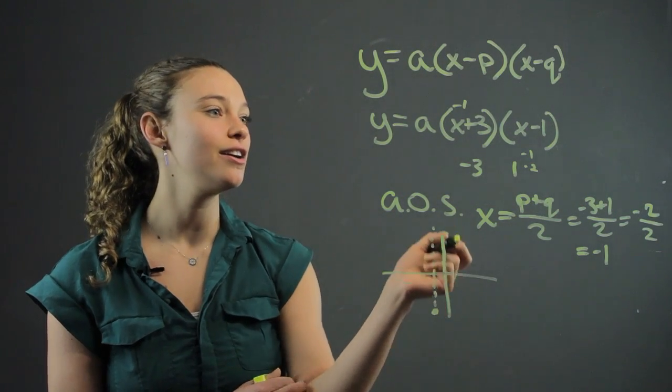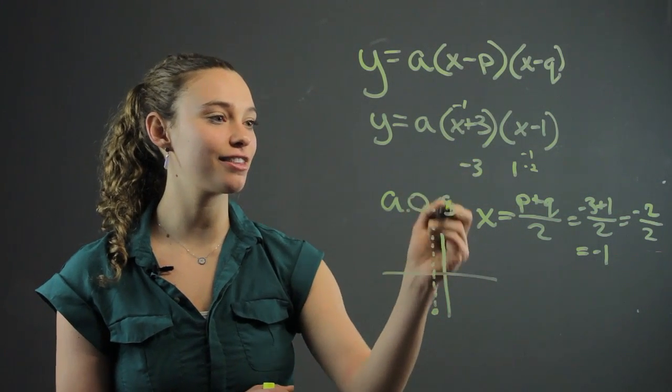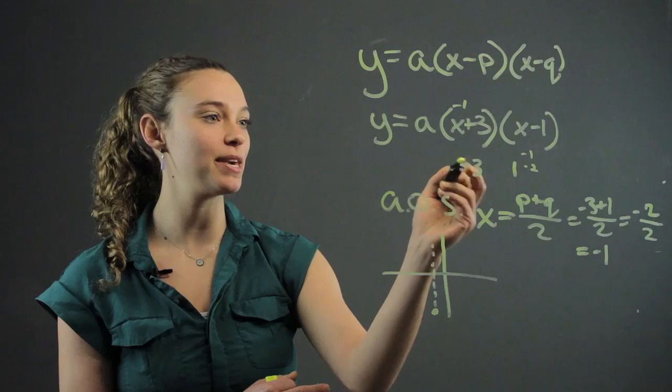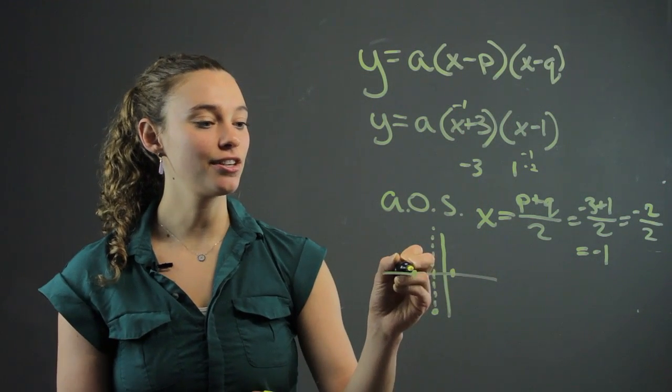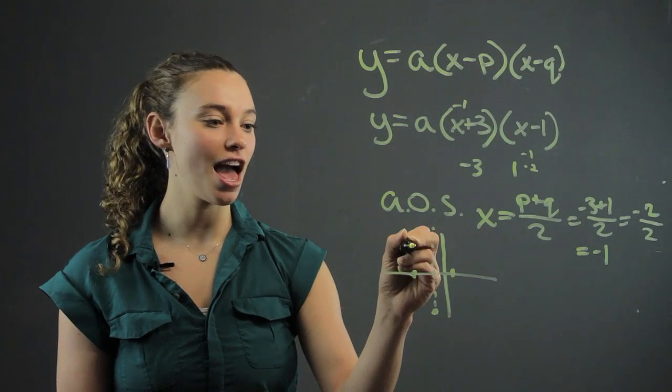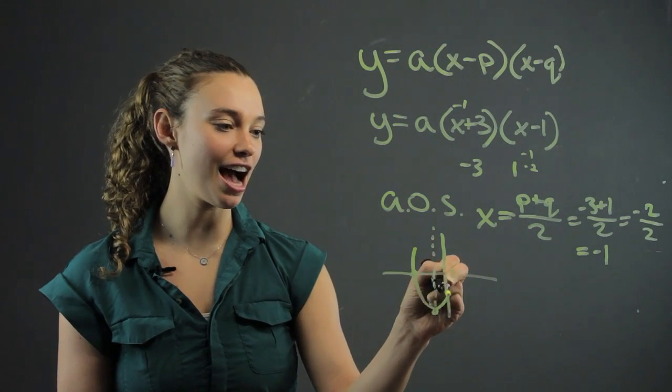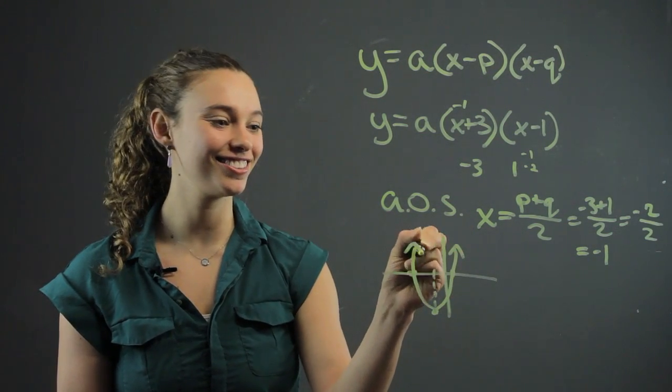This is our axis of symmetry. We also know we have negative 3, that was our p, and we have 1, which was our q. So those are our other two points, and from that, we have our quadratic.